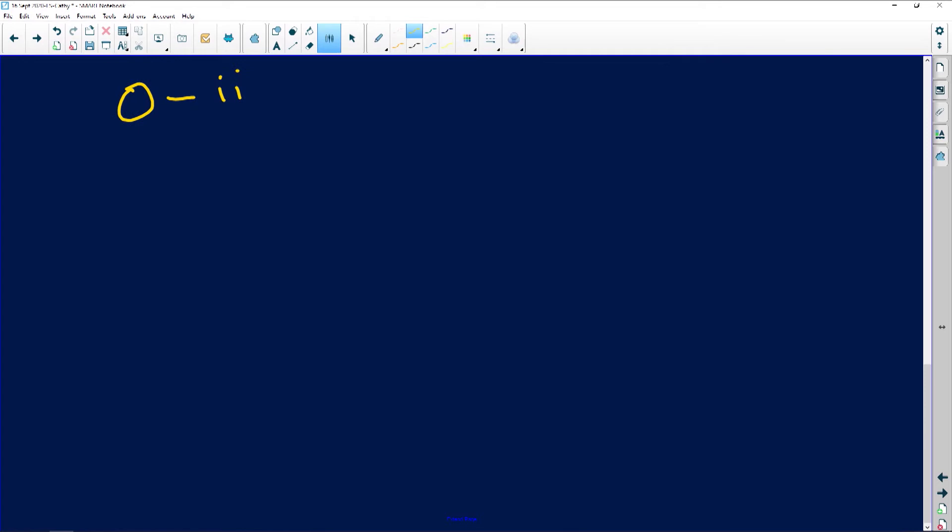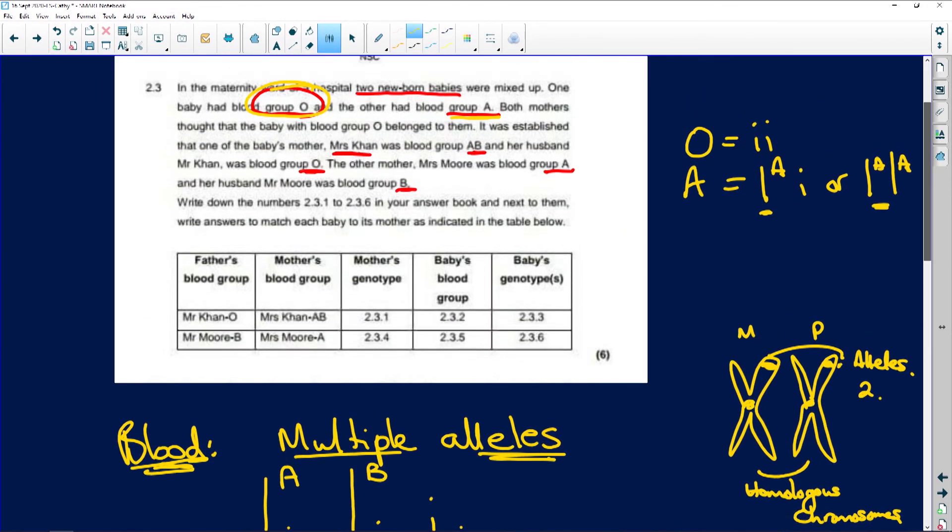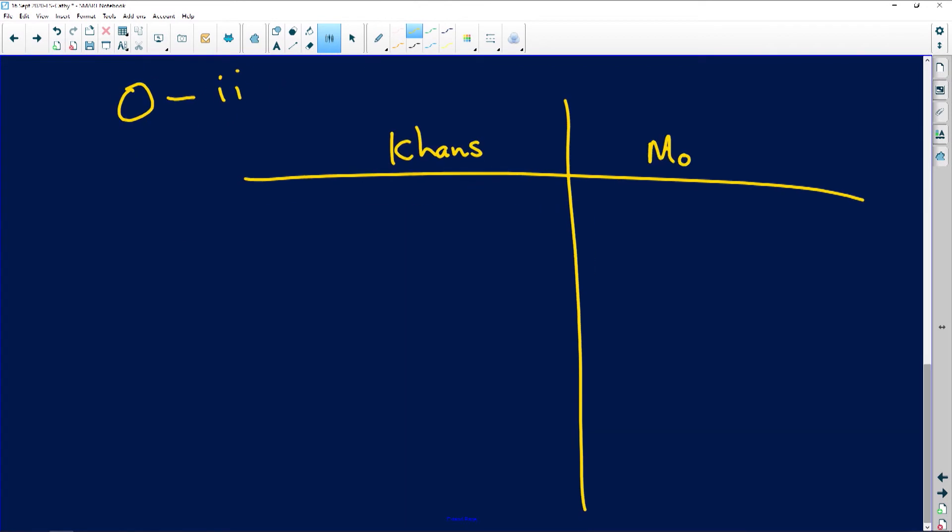So now I want to show you this. Let's do a little quick cross. Let's do it like this. So we're going to do the Khans here. And here we're going to do... What was the surname of the other parents? Muir. And we have the Muirs here. We have Mr. Khan and Mrs. Khan. And we have Mr. Muir and Mrs. Muir.